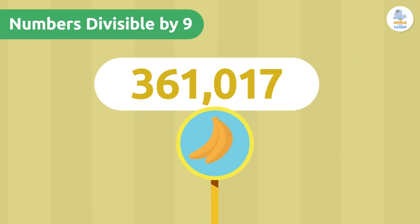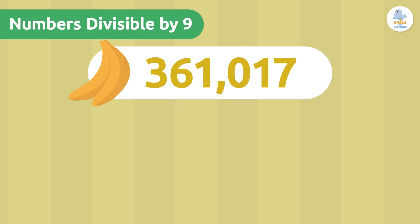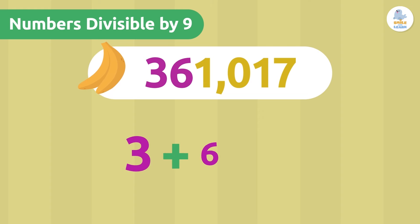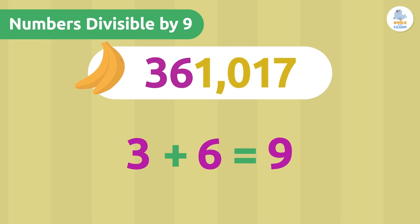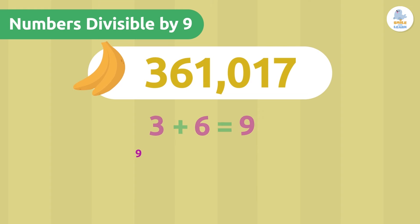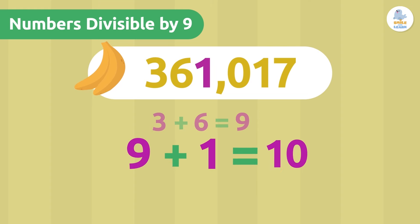The divisibility rule of 9 is calculated in the same way as the rule for 3. We have to add its digits, divide the result by 9, and check that the remainder is 0. Take a look: 3 plus 6 is 9, 9 plus 1 is 10.